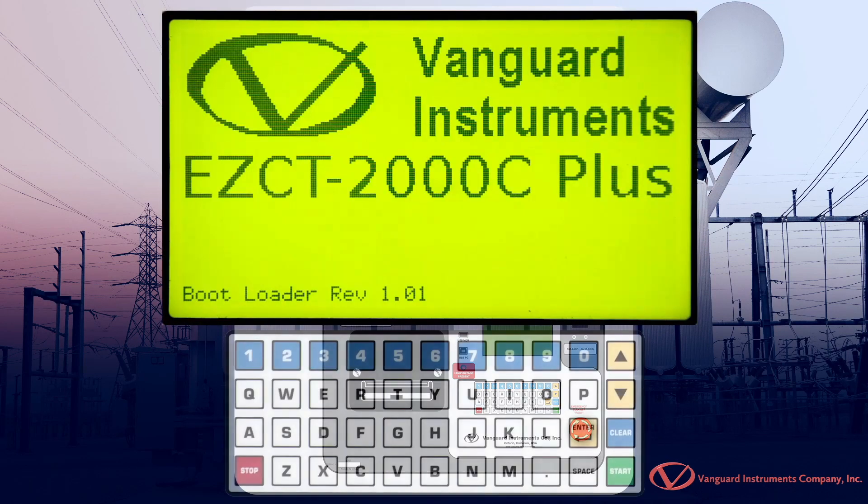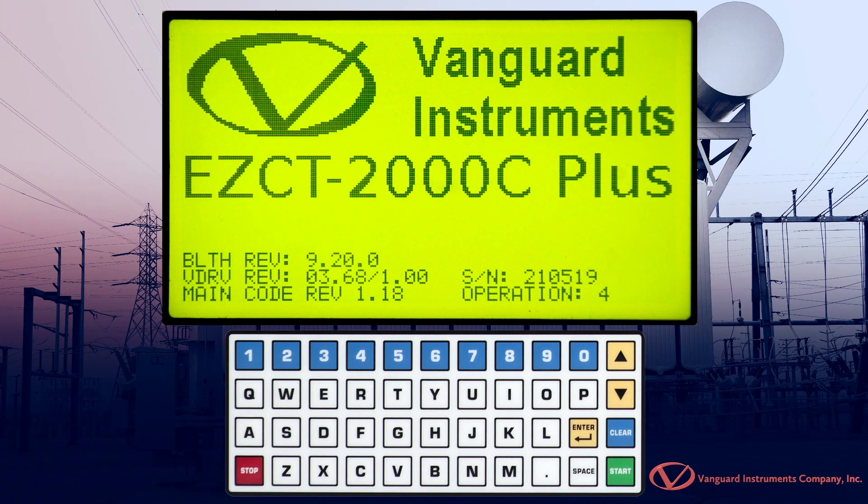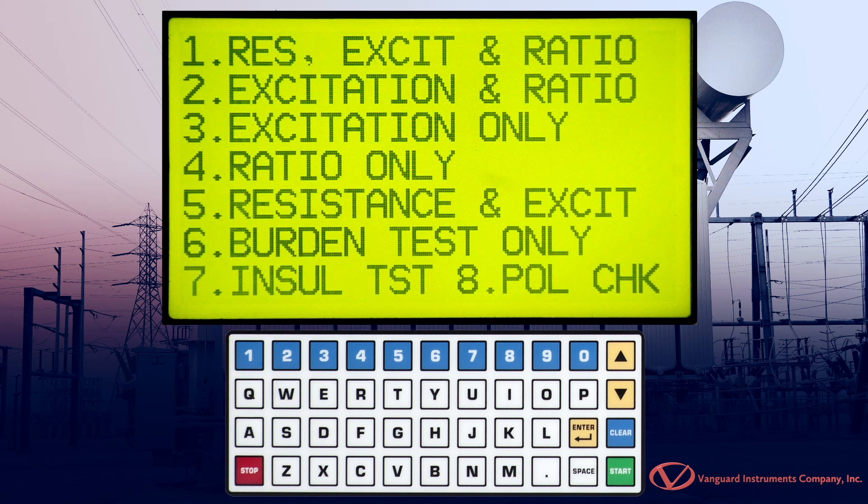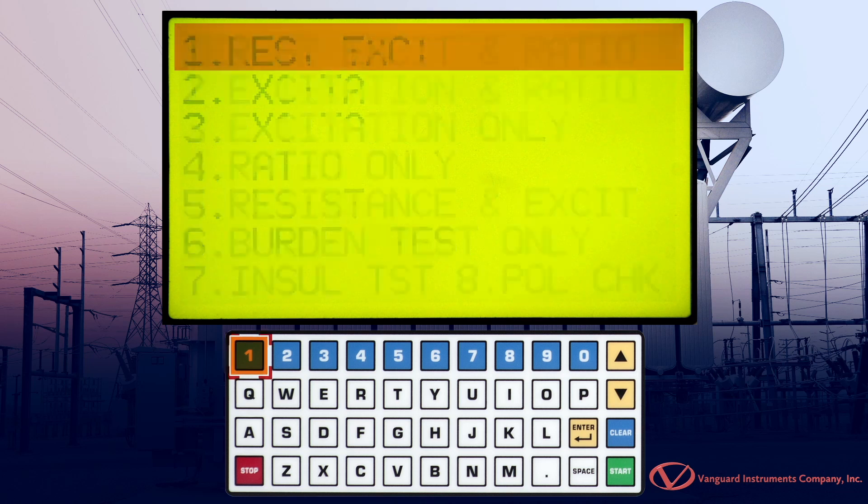Once the connections have been made, we'll start from the unit's main menu. Press the 1 key to select Run Test. We'll perform all three tests, so press the 1 key for Resistance, Excitation, and Ratio.